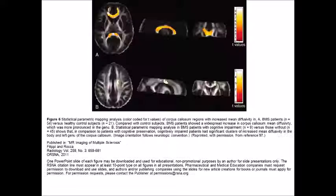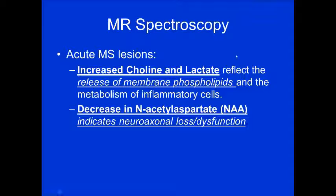MR spectroscopy: acute MS lesions show an increase in choline and lactate, reflecting release of membrane phospholipids and metabolism of inflammatory cells. Conversely, there's a decrease in NAA — N-acetylaspartate — indicating neuroaxonal loss or dysfunction.